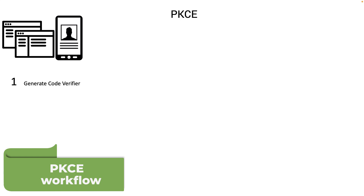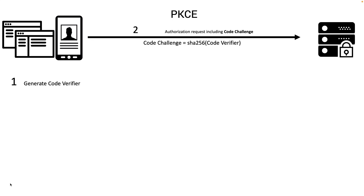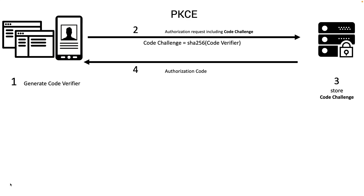Before the application starts the authorization process, it first generates a random value called the code verifier. Then the client initializes the authorization request and includes the SHA-256 hash value of the code verifier, known as the code challenge. The authorization server then stores the code challenge, and the rest of authentication and authorization continues.